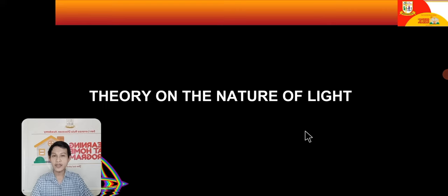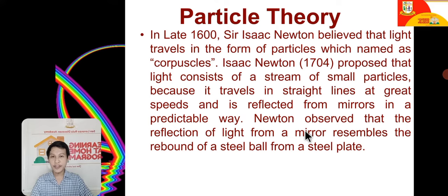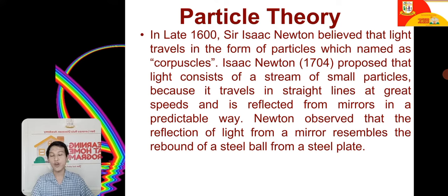Let us look at the two theories of the nature of light. First, the particle theory. In the late 1600s, Sir Isaac Newton believed that light travels in the form of particles which he named corpuscles. In 1704, Newton proposed that light consists of a stream of small particles because it travels in straight lines at great speeds and is reflected from mirrors in a predictable way. Newton observed that the reflection of light from a mirror resembles the rebound of a steel ball from a steel plate.